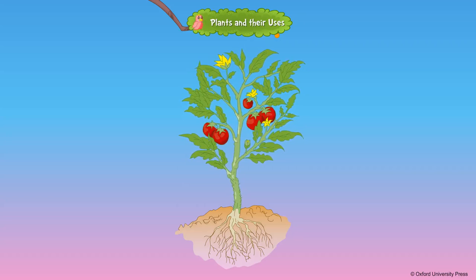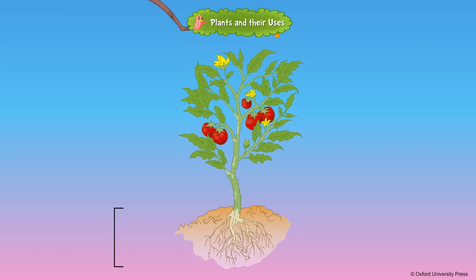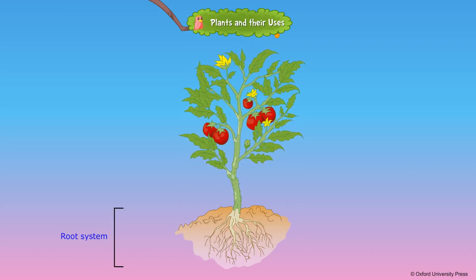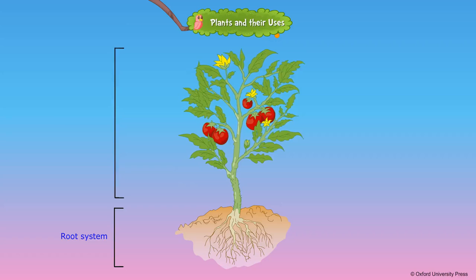A plant has two main parts. The part that grows under the ground is called the root system. The part that grows above the ground is called the shoot system.